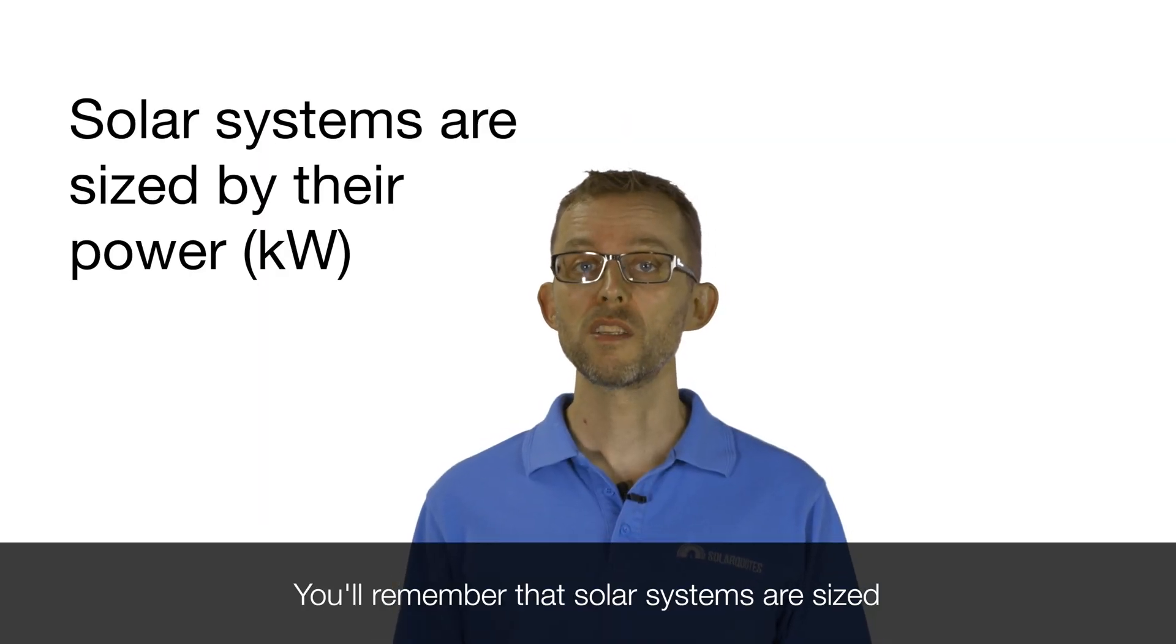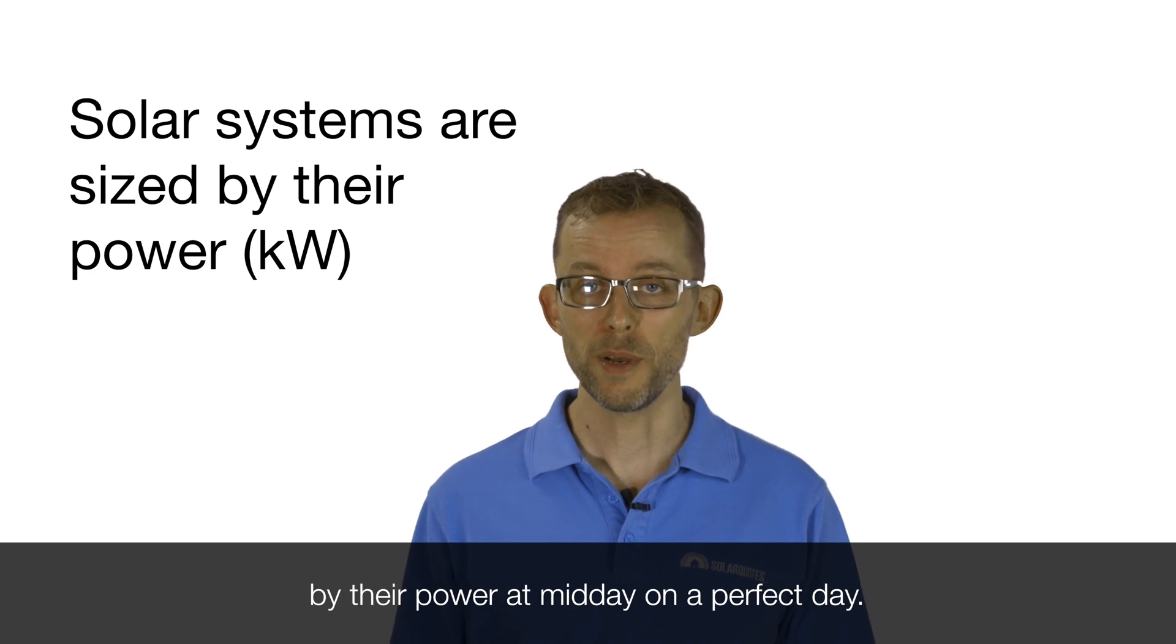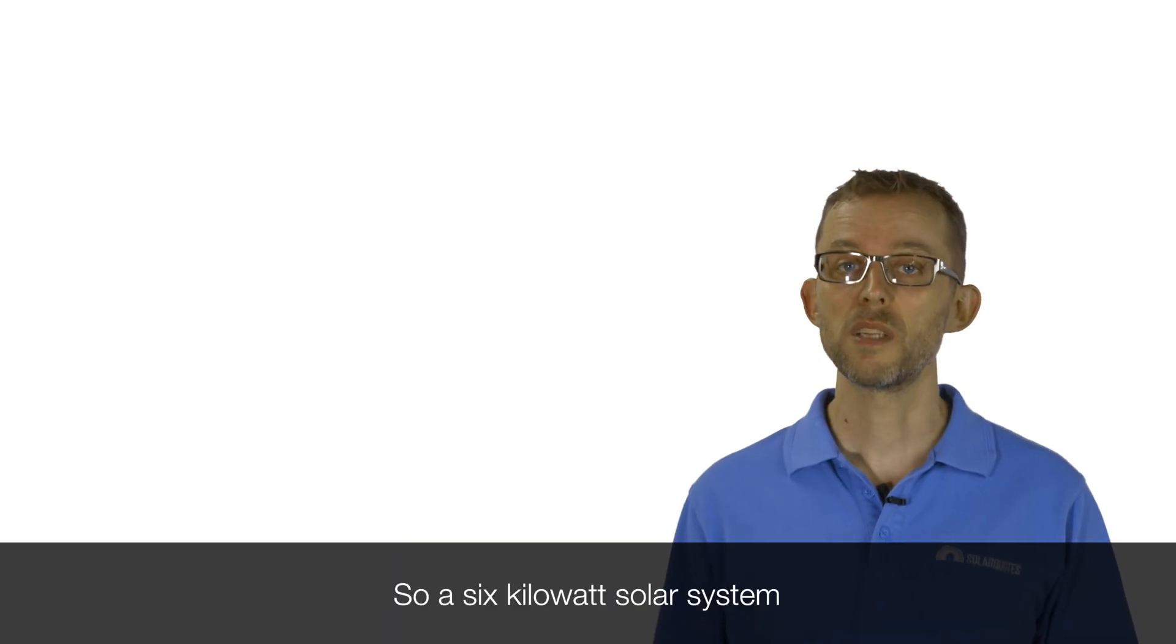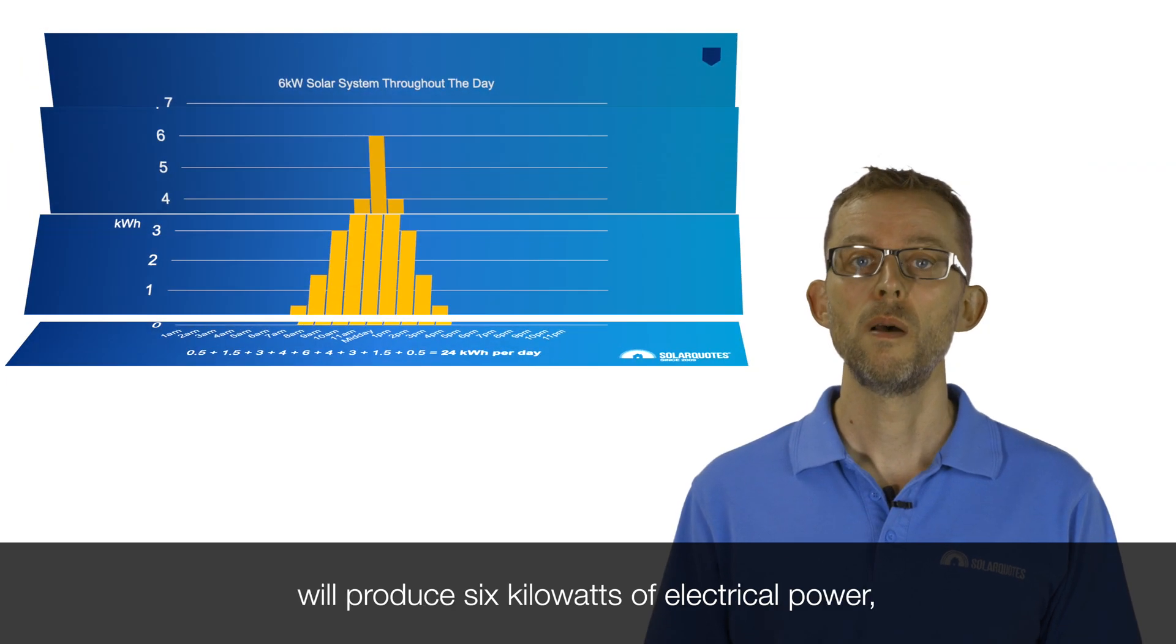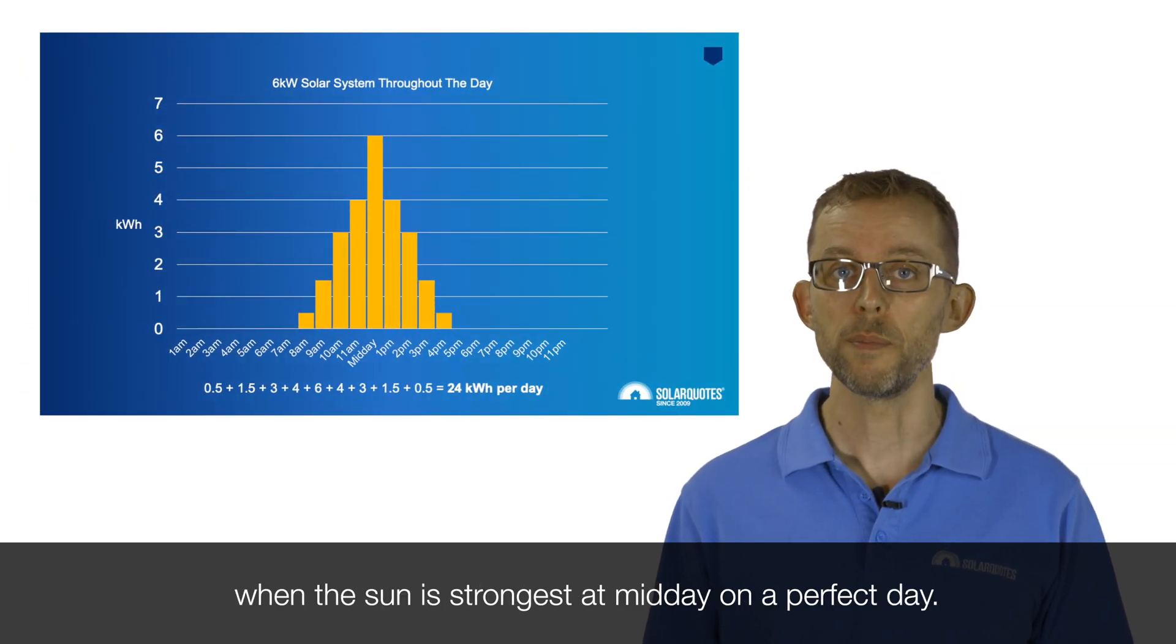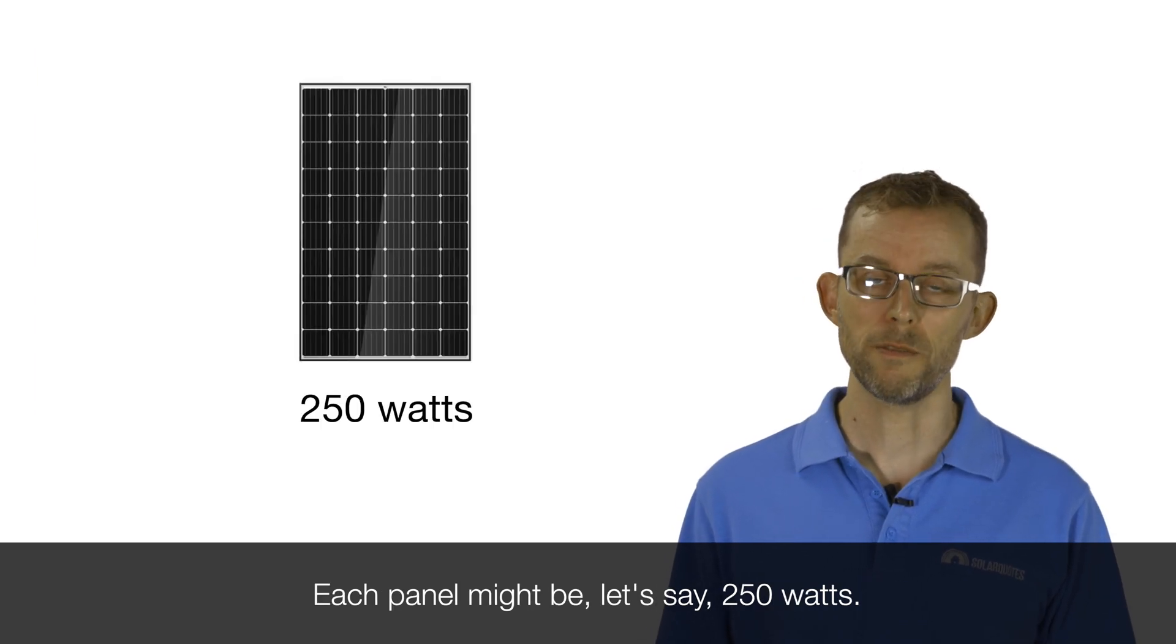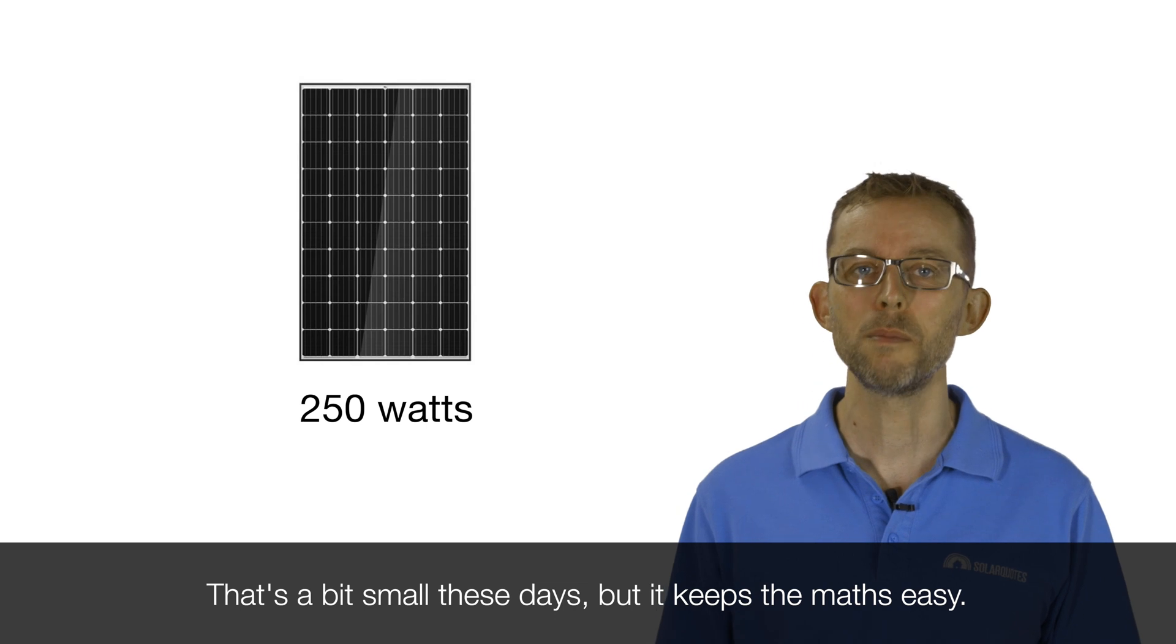You'll remember that solar systems are sized by their power at midday on a perfect day. So a 6 kilowatt solar system will produce 6 kilowatts of electrical power when the sun is strongest at midday on the perfect day. Each panel might be, let's say, 250 watts. That's a bit small these days, but it keeps the maths easy.